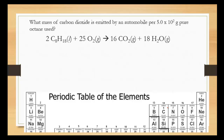Let's start with this one: what mass of carbon dioxide — we're looking for grams of CO2 — is emitted by an automobile per 5.0 times 10 to the second grams of octane? Notice that these are in grams. We're going from grams to grams, and in order to go from one compound to another you have to go through moles. So I need to go from grams to moles of C8H18.